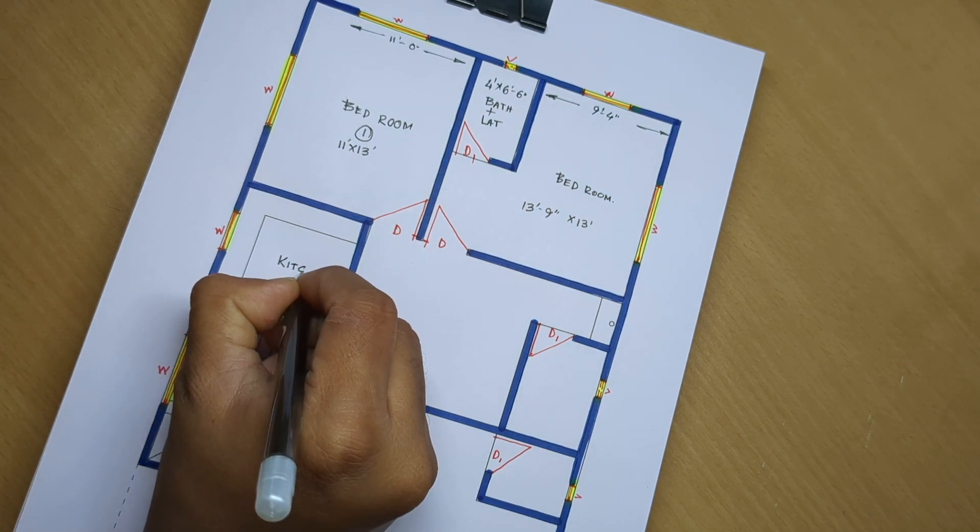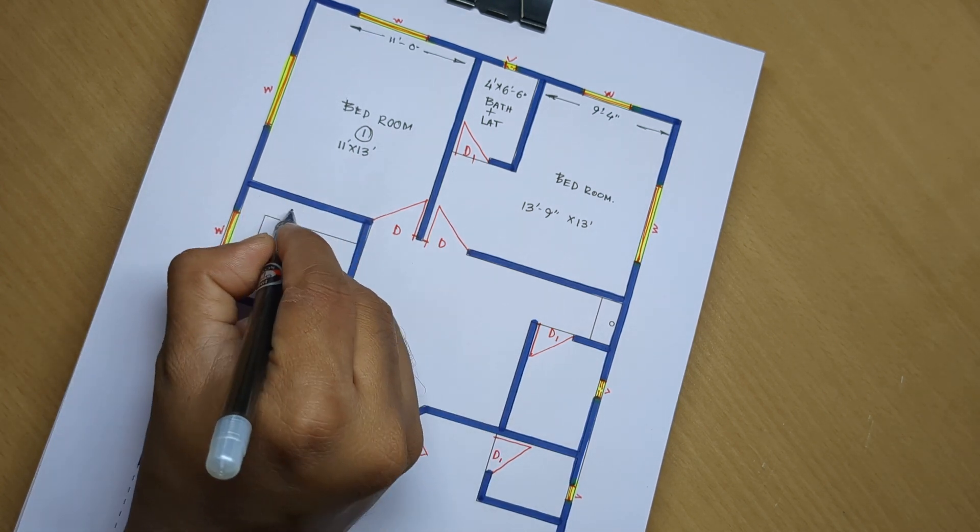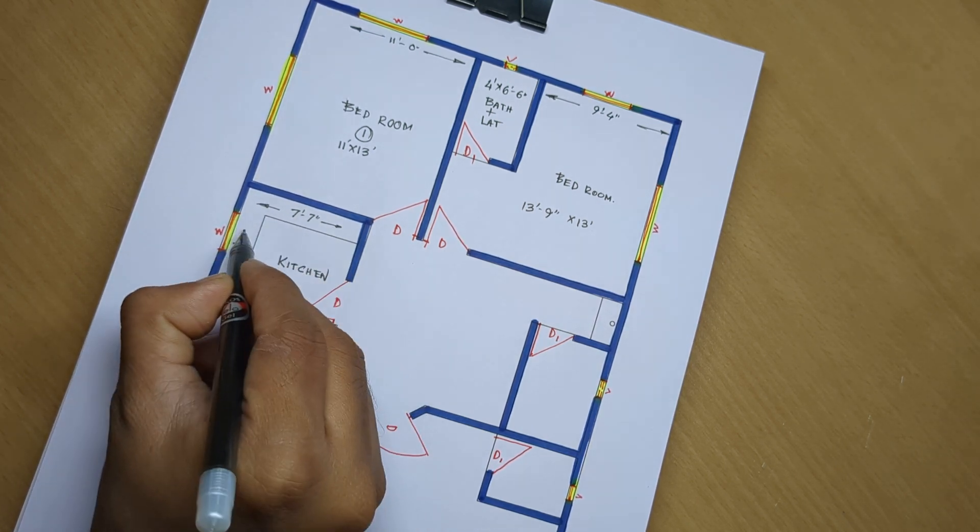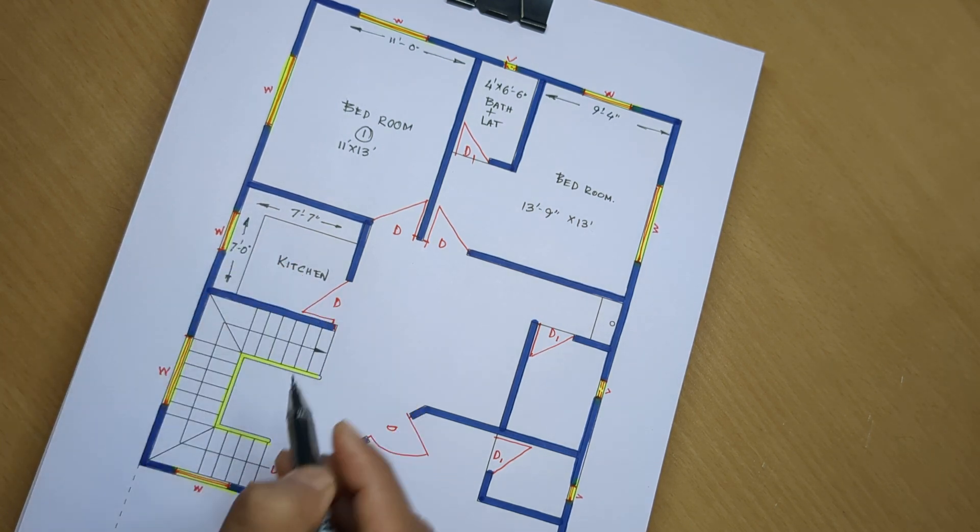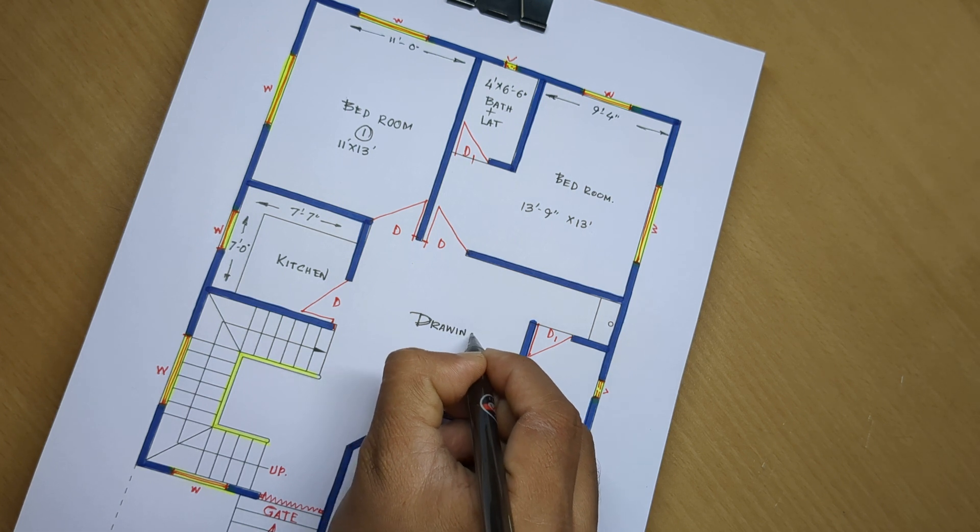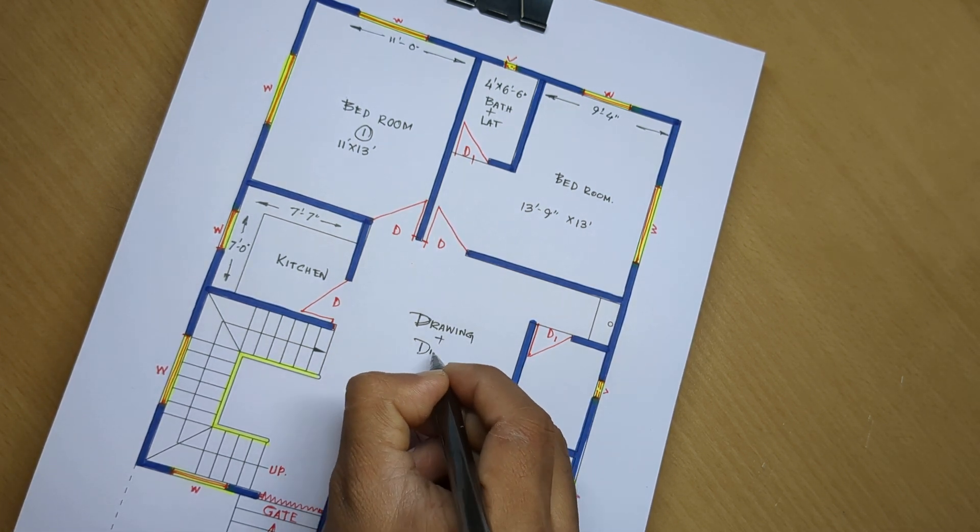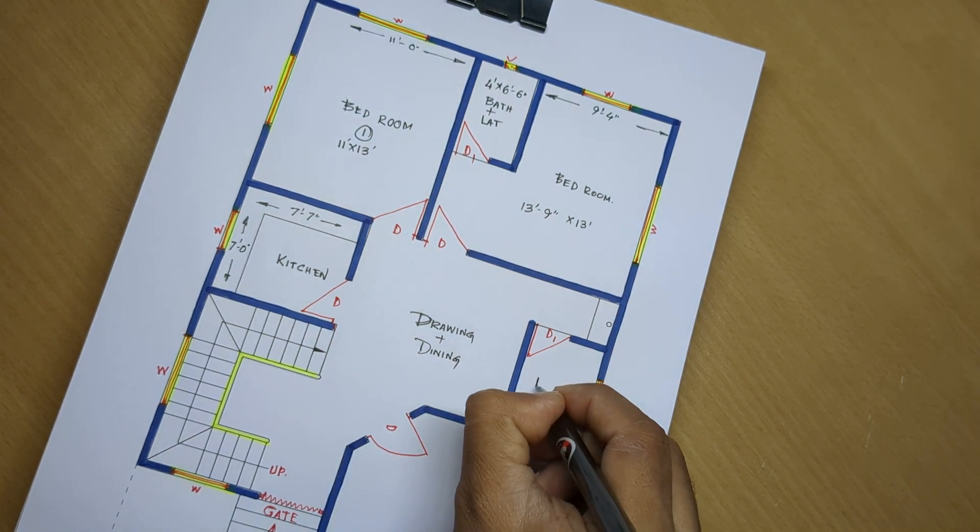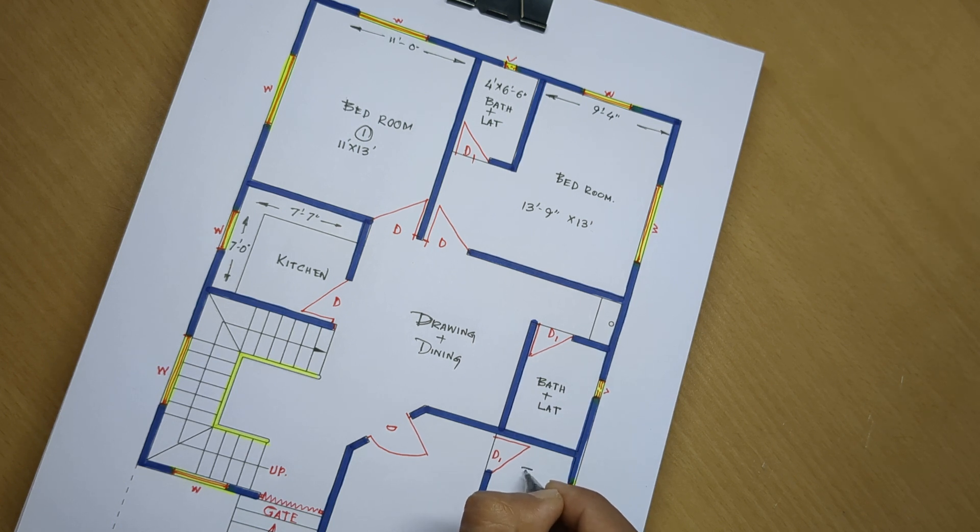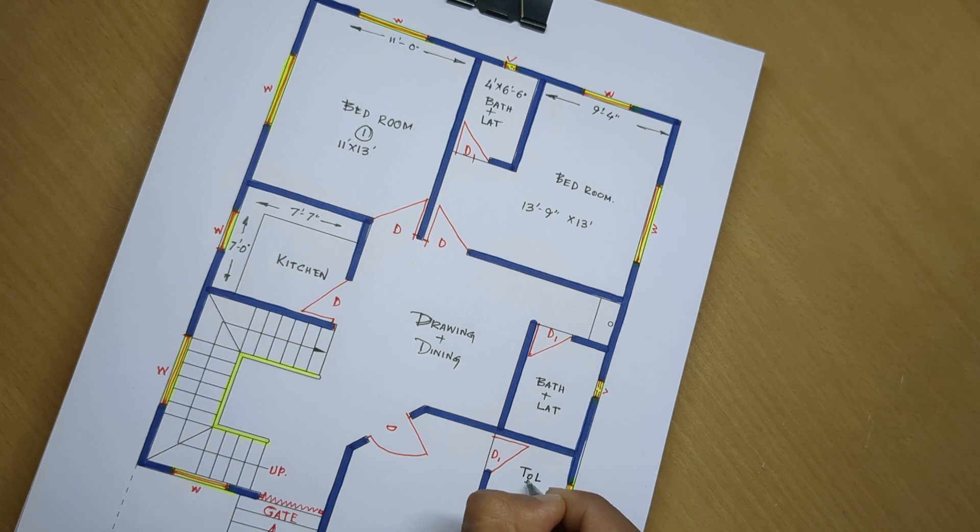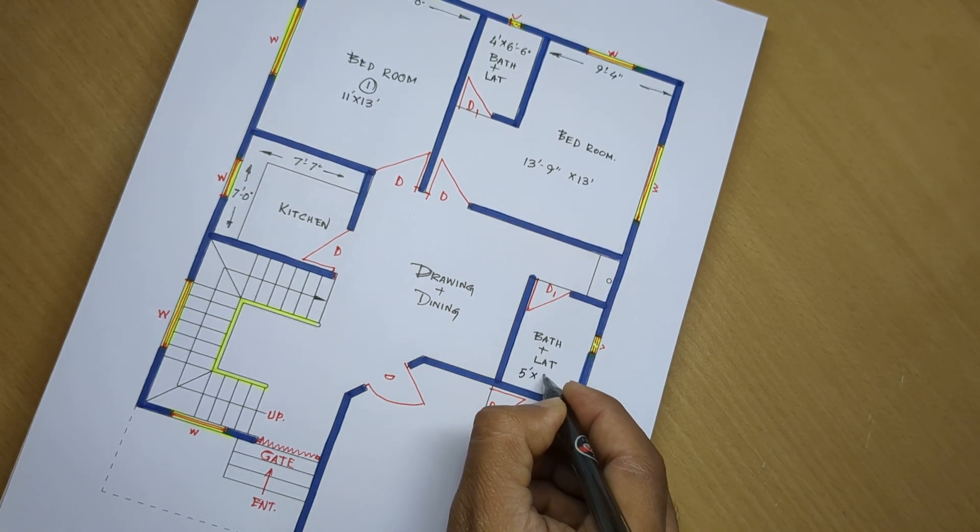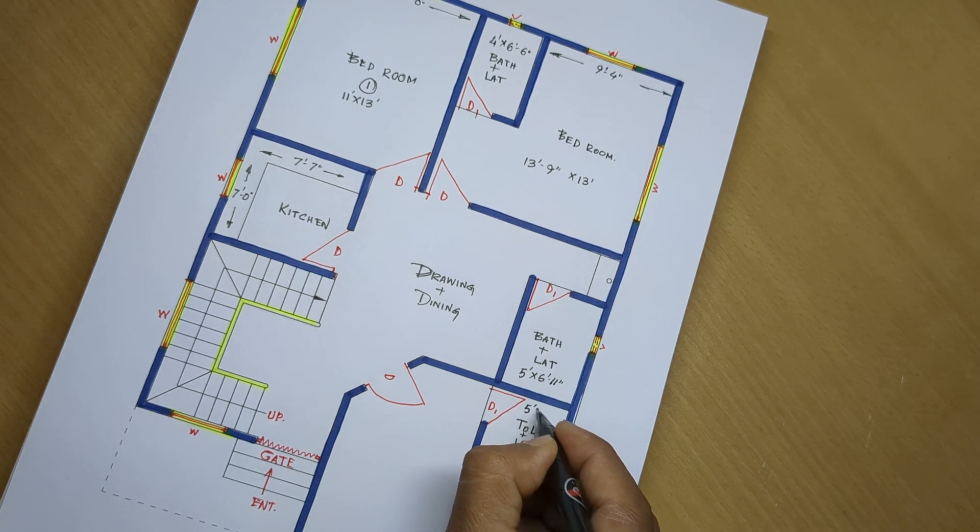Kitchen 7 feet 7 inch, 7 feet 0 inch. Living plus dining, bath plus latrin. 12 plus latrin. 5 feet, 6 feet 11 inch, 5 feet, 4 feet.